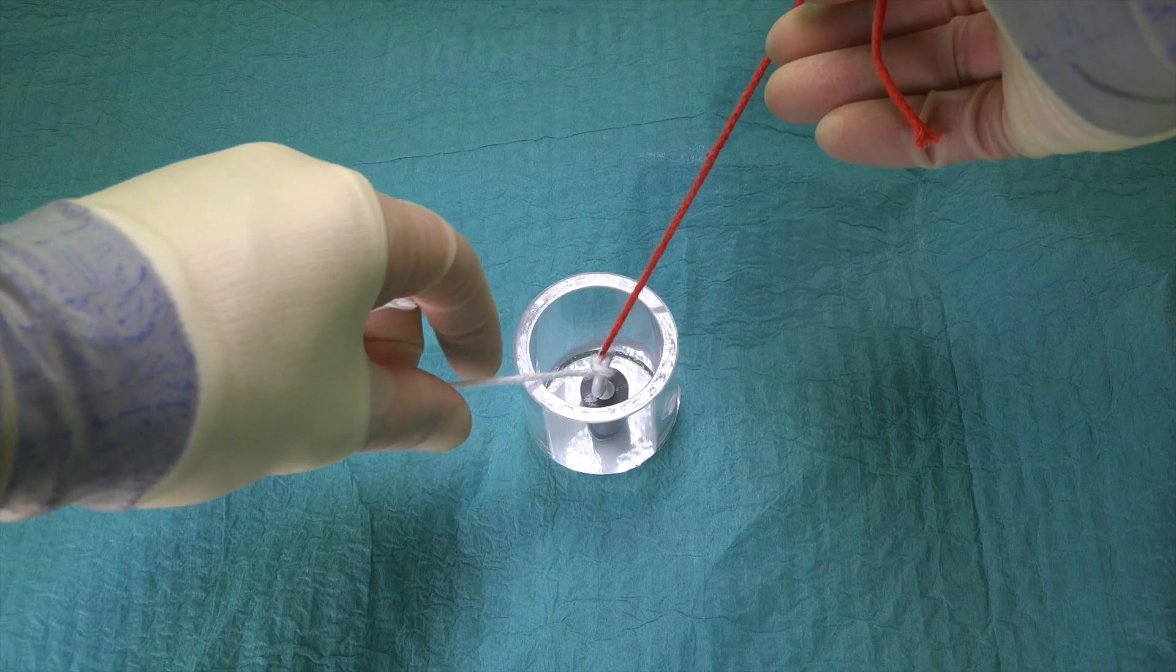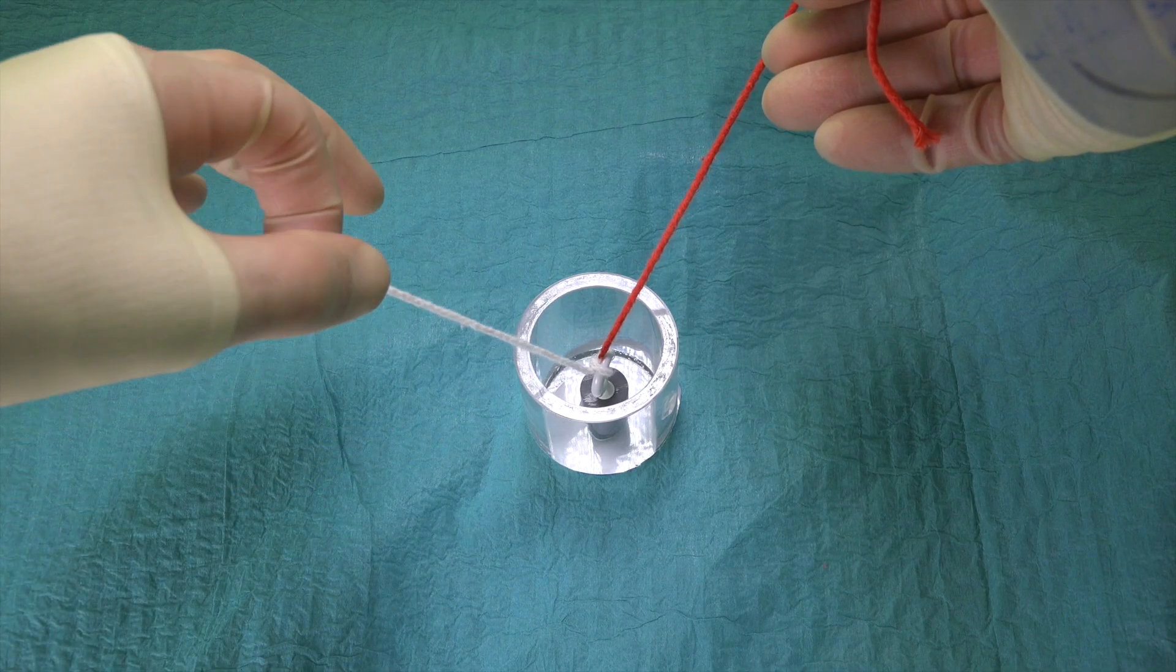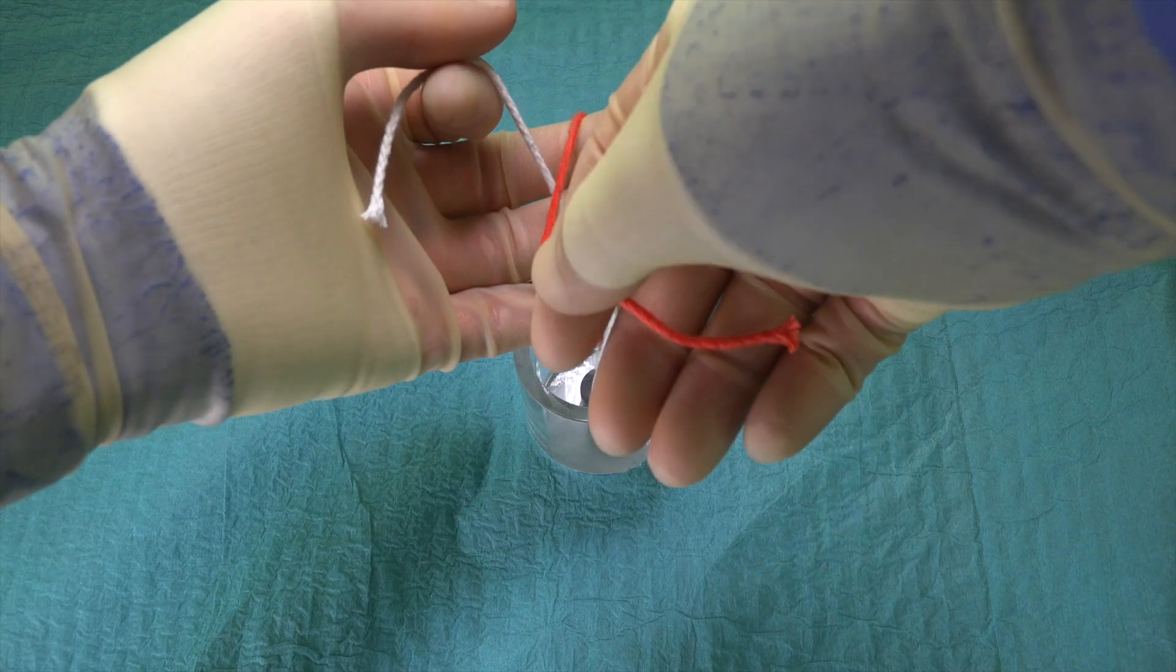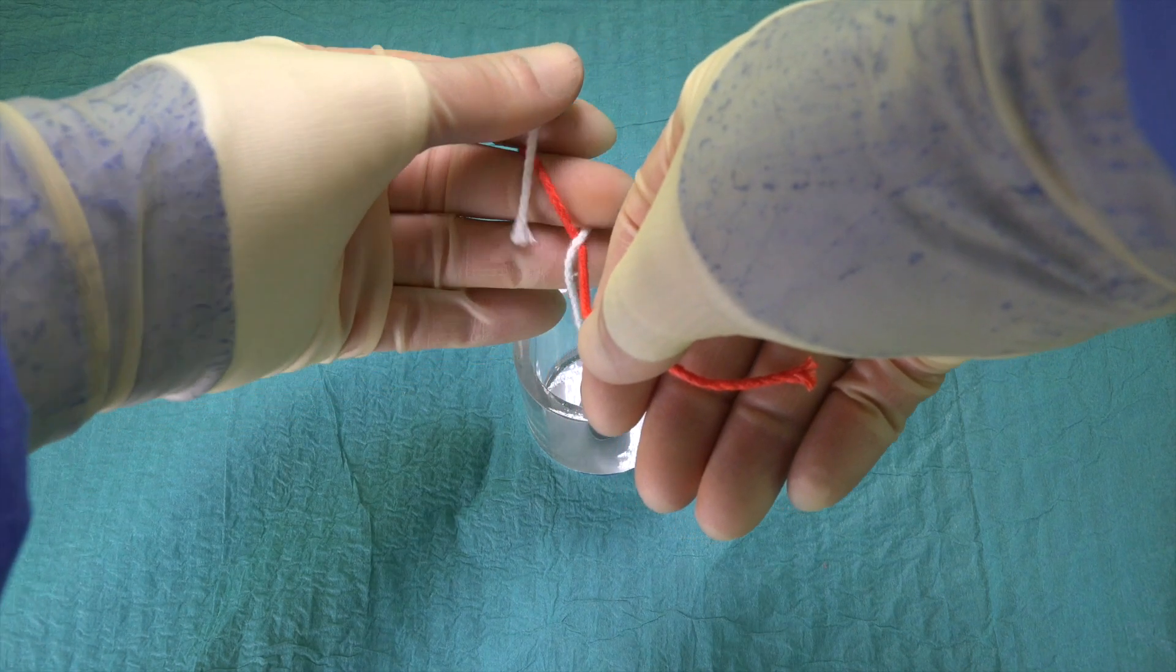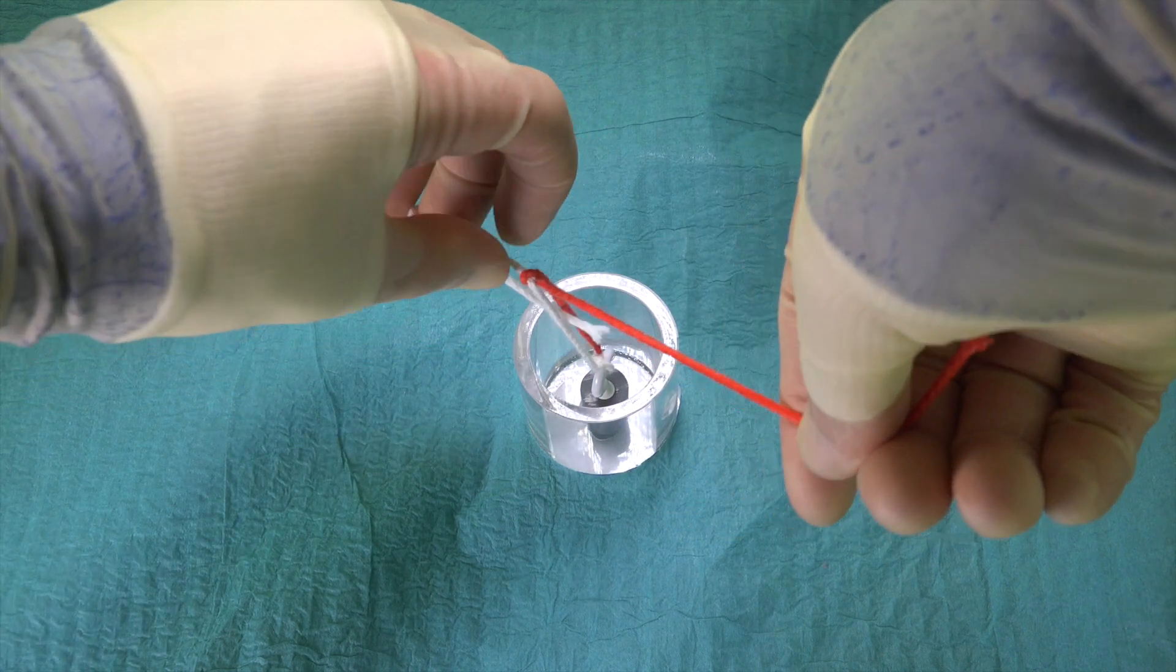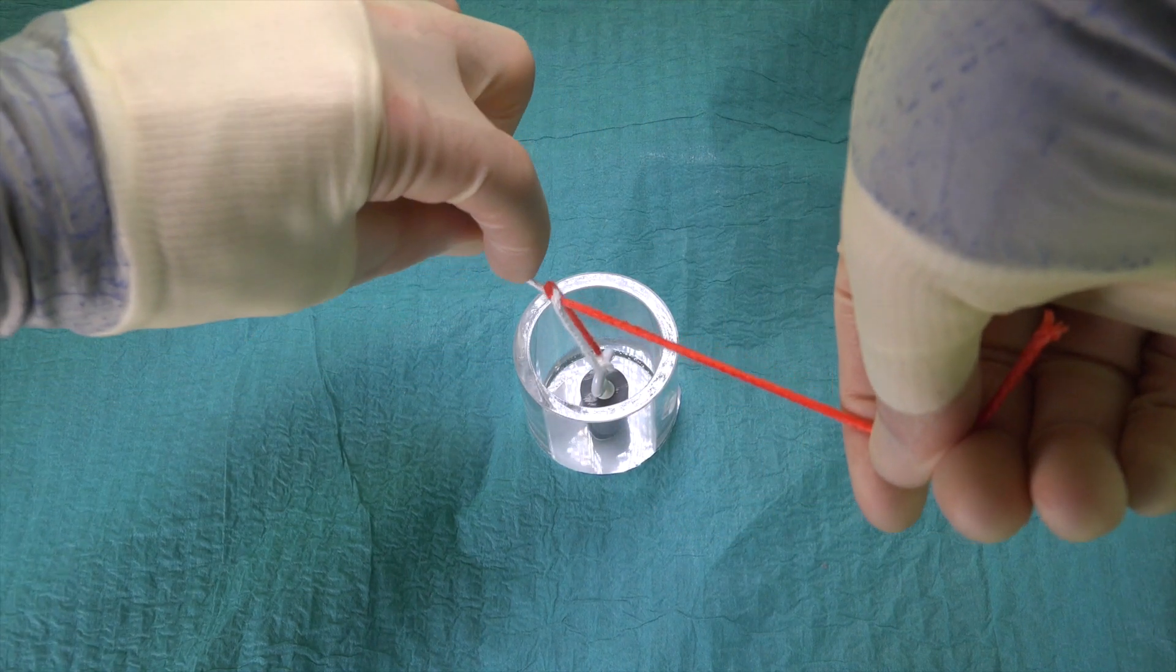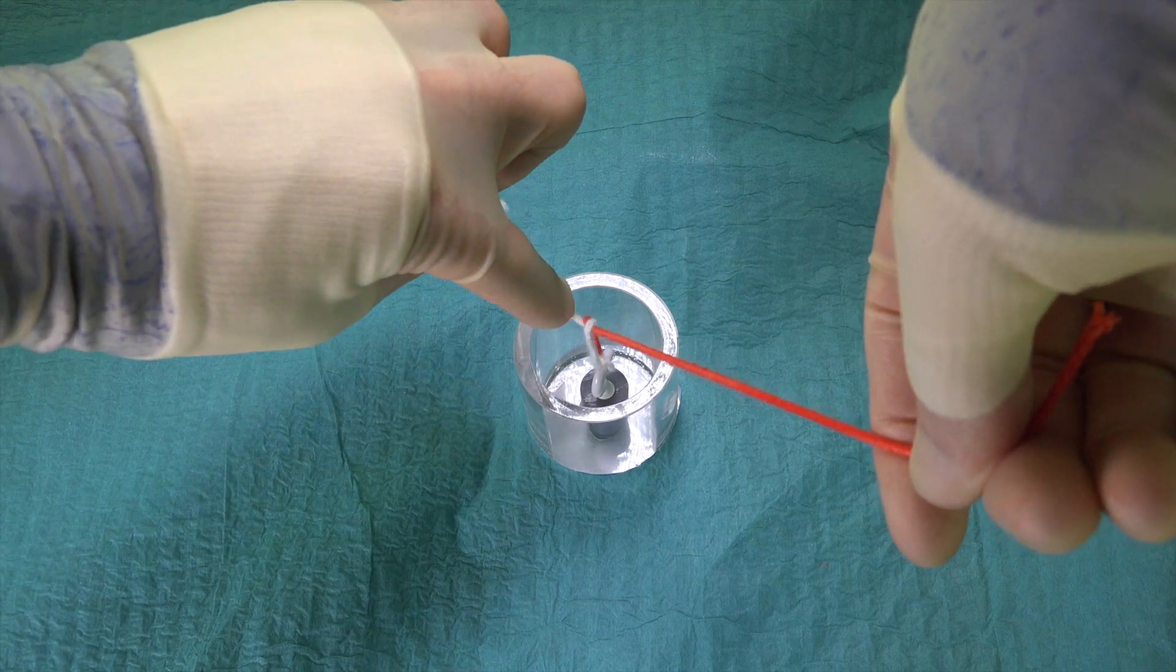For the second throw, the left hand changes to an underhand position, and the same movement is carried out as we would for a normal hand-tied reef knot. The right hand is then moved slightly towards us and maintains gentle upward traction on the suture. This prevents the knot from loosening between throws.